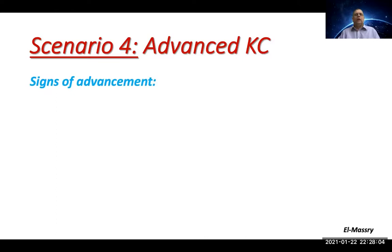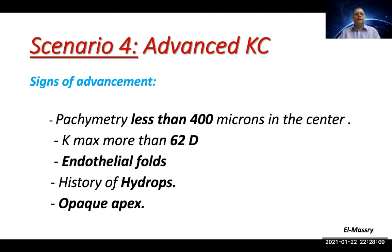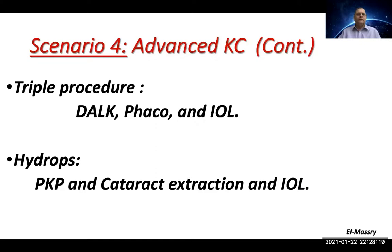Scenario 4 is patients with advanced keratoconus. Signs of advancement include corneal thickness less than 400 microns, Kmax exceeding 62 diopters, starting endothelial failure, history of hydrops, or an opaque apex. In this case, we are only left with the triple procedure: deep anterior lamellar keratoplasty combined with phacoemulsification and IOL, or, if there is hydrops, penetrating keratoplasty with cataract extraction and intraocular lens.